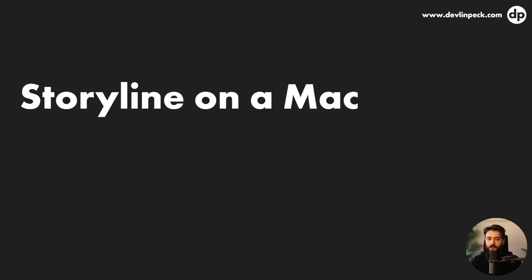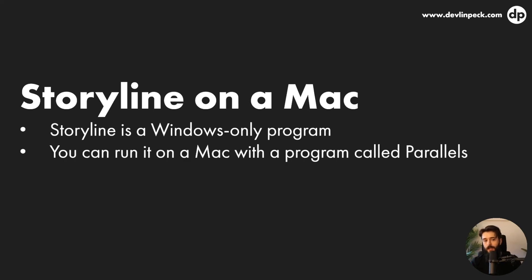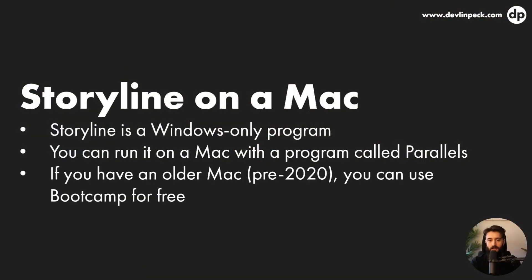This is another very common question: Storyline on a Mac. Storyline is a Windows-only program — they have no plans to make it a Mac-friendly program, so don't even consider that as an option. But you can run it on a Mac, and many people do run it on a Mac with a program called Parallels. Parallels costs somewhere between 50 and 100 dollars depending on what promotions they're running, but it lets you run Windows-only software on your Mac computer just like any other Mac application. You'll just click on Storyline on your Mac, it opens up, and it feels like it's running perfectly fine — just a couple of extra steps and a tiny bit of setup. I do have a tutorial on the channel about how to do that.